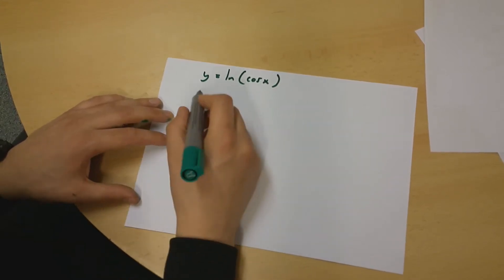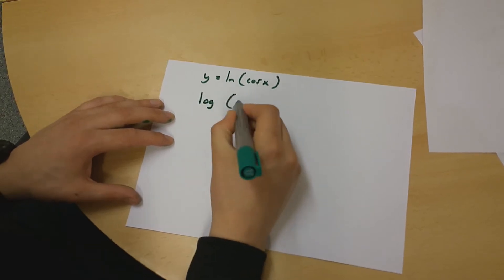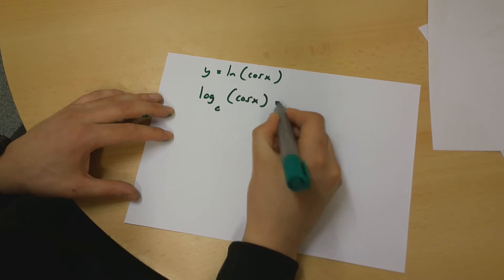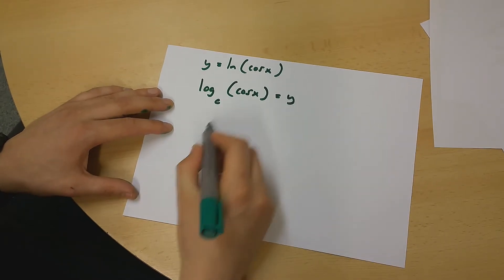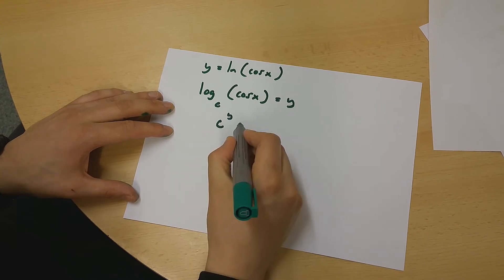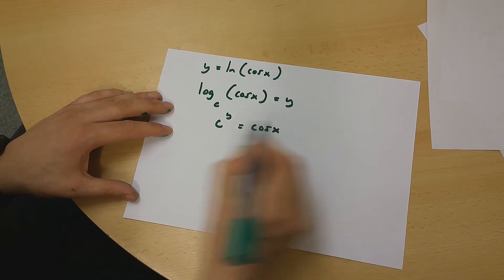Firstly, let's say that log cos x to the base e is equal to y. Therefore, e to the power of y is equal to cos x.